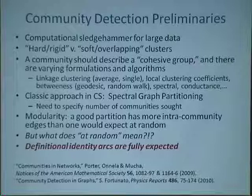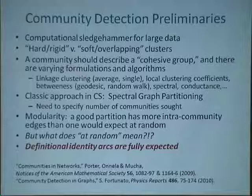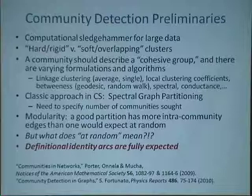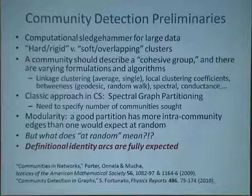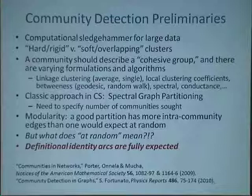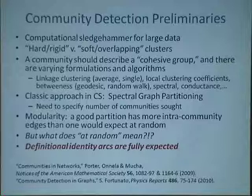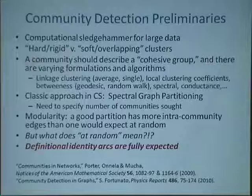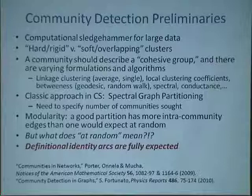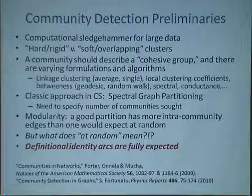Newman and Girvan's idea was that a good community would be one with many more connections inside the group than you would expect on average. A good partitioning assigns every node to a group to optimize the number of edges inside groups minus what you'd expect at random. Why not just maximize total edge weight? That has a trivial solution: call the whole connected component one group. So you need the pressure of 'minus what you expect at random' to force splitting into smaller groups. The recurring theme is: what do you really mean by 'at random'? And answering that question is how we extend modularity to the multi-slice framework.